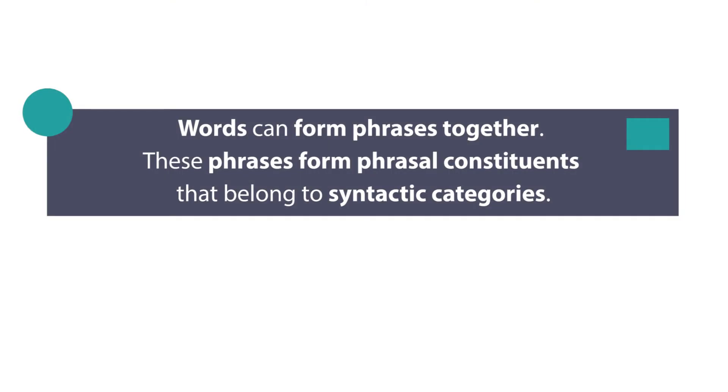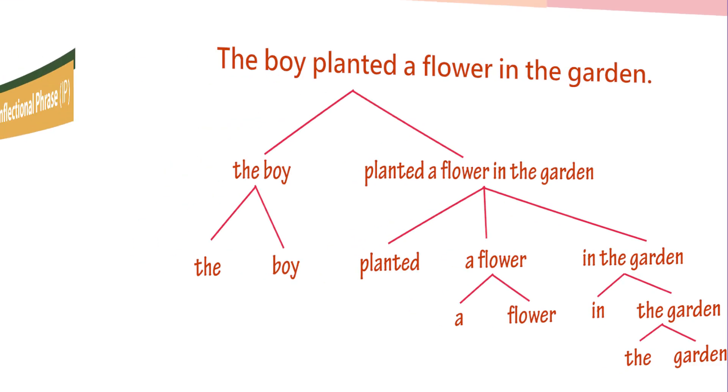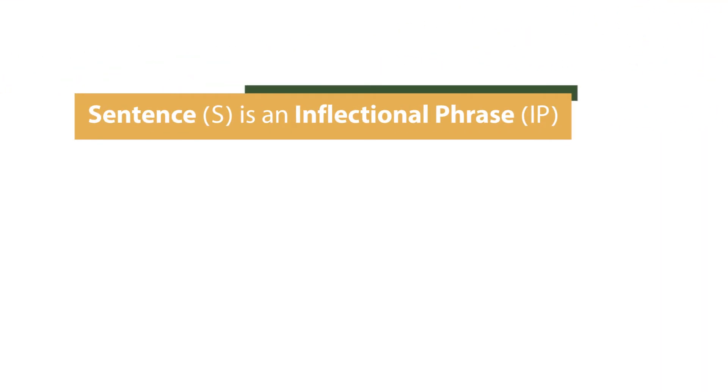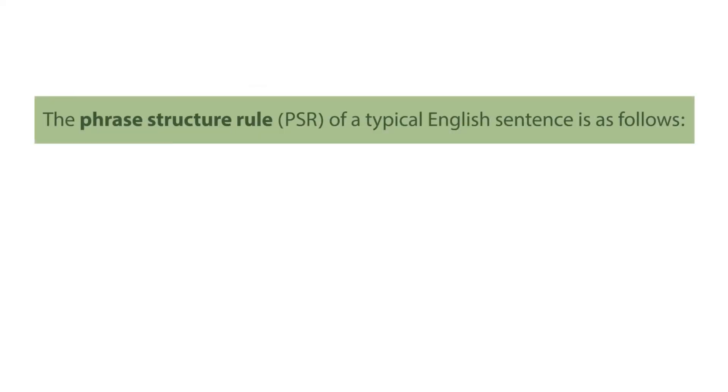Last week we talked about phrases and phrase structures. The sentence in English has a phrase structure and you can draw a tree diagram for a sentence. We're trying to understand the constituent structure of the English sentence. Right now we're just focused on English, a typical declarative sentence in English.